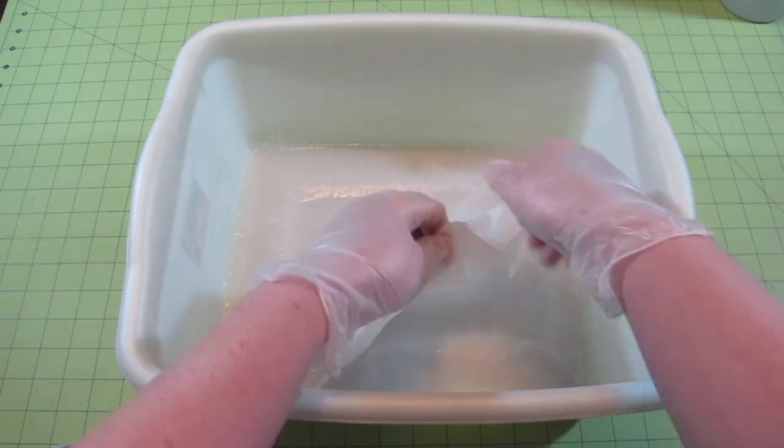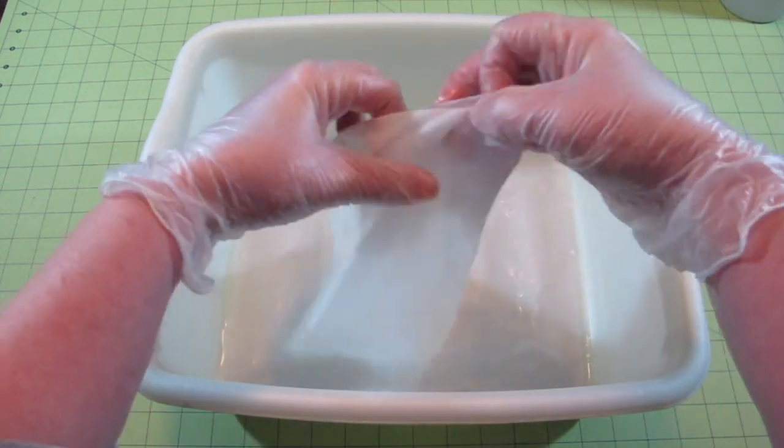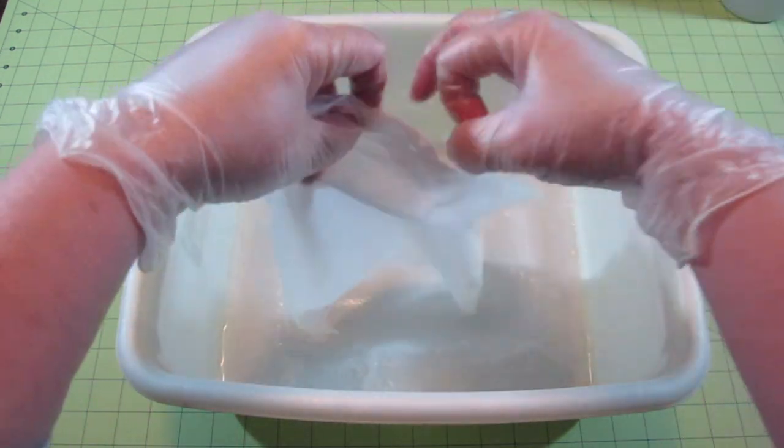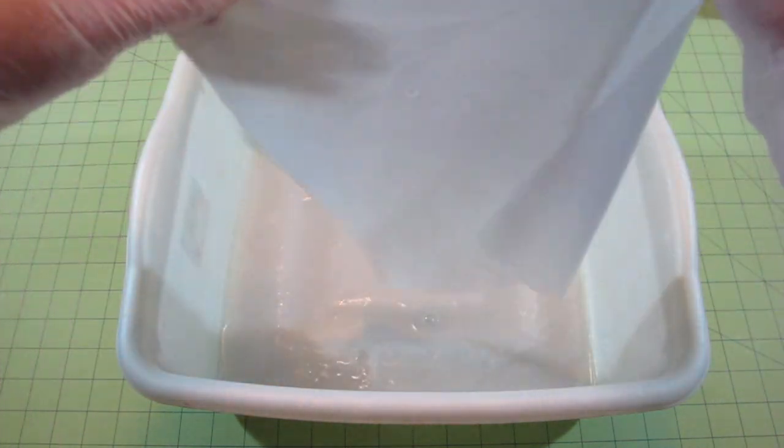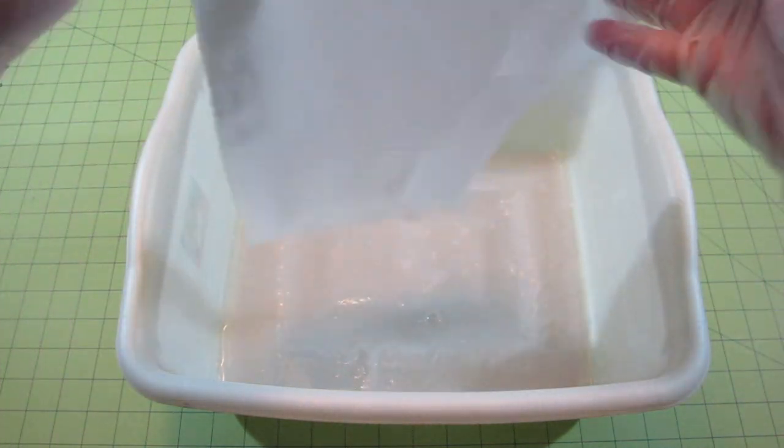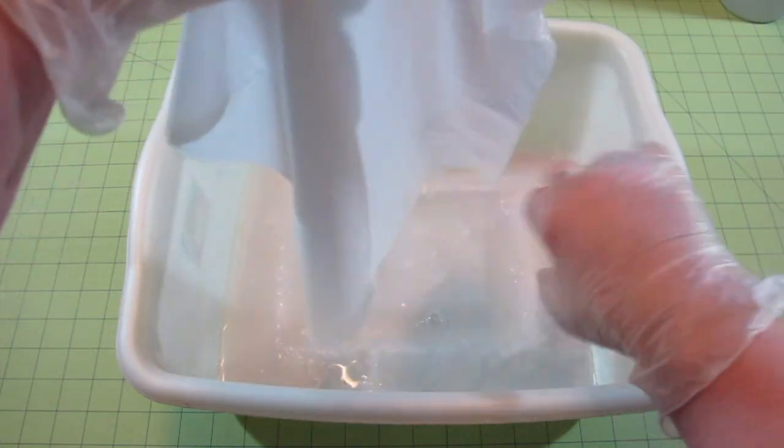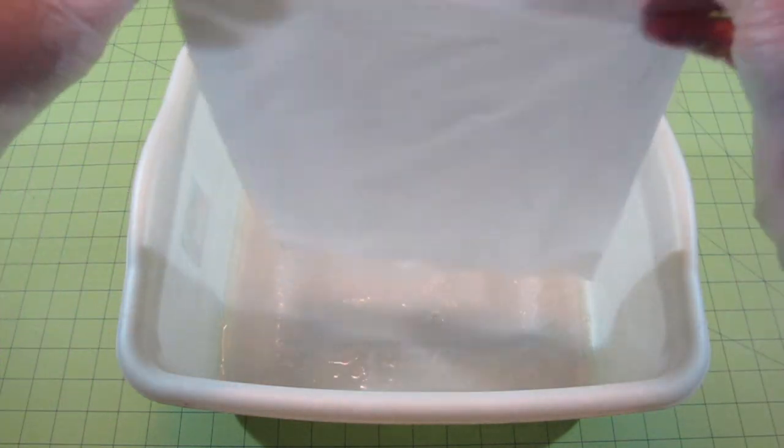After 5 minutes, remove the fabric from the tray by picking up 2 corners and allow the excess solution to drip off. Then place the fabric flat on a towel to dry. You can then return any excess solution to the bottle for reuse.